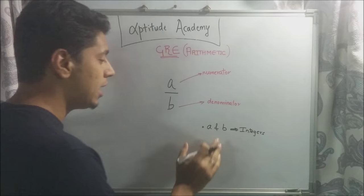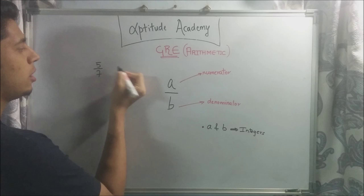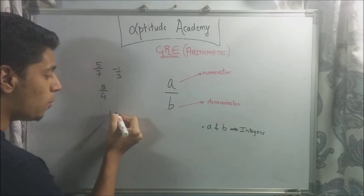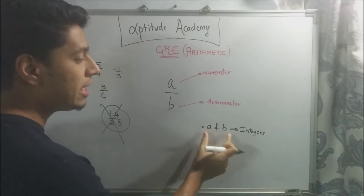Now when I say A and B have to be integers, what I mean is you can have fractions as 5 over 7 or minus 1 by 3 or 3 by 4. You cannot have a fraction like 1.4 over 2.3 because 1.4 and 2.3 are not integers and thereby this is not a fraction. So if A and B are integers like this, you can have fractions.